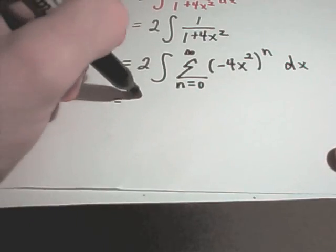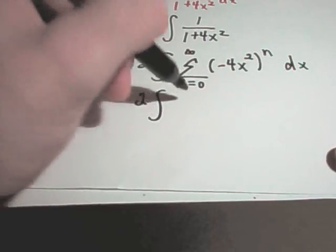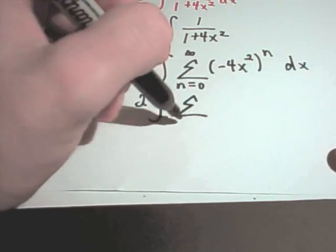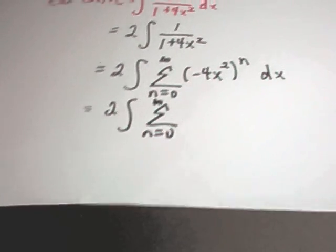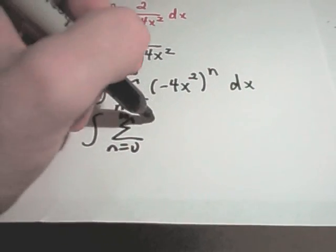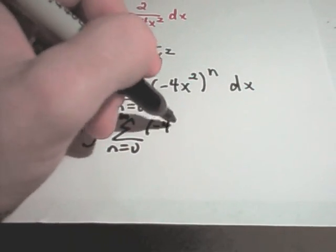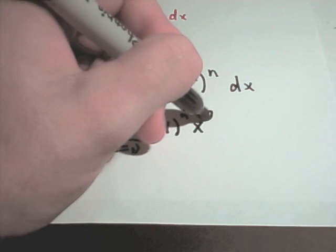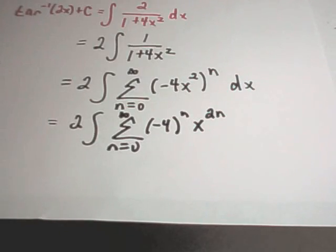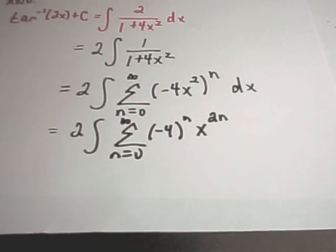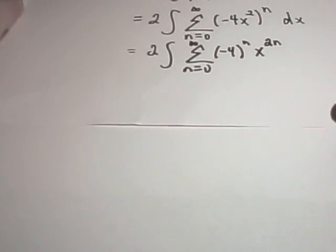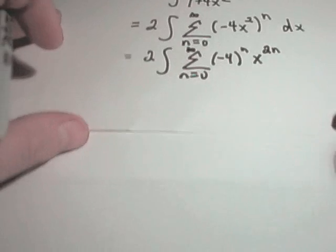We can keep rewriting this. Cleaning it up a little bit more: from n equals 0 to infinity, I'm going to write this as negative 4 to the n power times x to the 2n power. And now, just like I took a derivative in the last part, I'm just going to integrate this right-hand side.